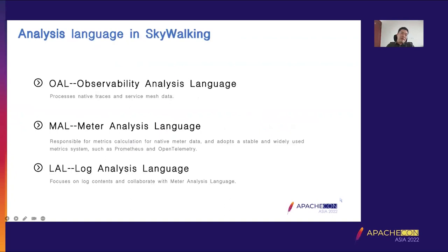First, what is MAL? There are three analysis languages in SkyWalking. OAL, the Observability Analysis Language, processes native traces and service mesh data such as Envoy Access Log. MAL, the Meter Analysis Language, is responsible for metrics calculation for native metadata and adopts stable, widely used meter systems such as Prometheus and OpenTelemetry. LAL is a Log Analysis Language — it focuses on log contents and cooperates with MAL, analyzing and extracting log contents and generating metrics for MAL to calculate.